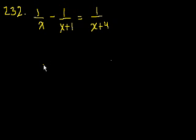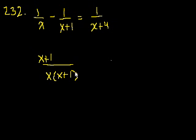If we simplify this left-hand side, a common denominator would be x times x plus 1. And then the numerator would be, 1 over x is the same thing as x plus 1 over this thing, right? Because that cancels out and you get 1 over x. Minus 1 over x plus 1, that's the same thing as x over x times x plus 1. The x's would cancel out.